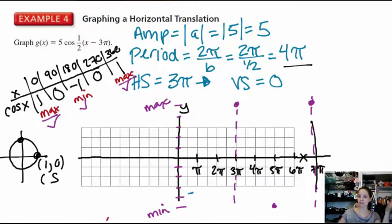And then, in between the maximum and minimum, and the minimum and maximum, is the 0, the x-intercept. So, I'm going to go exactly halfway between. It's going to be 4π here, and 6π. And now, I can connect these 5 points.